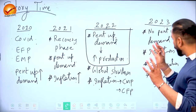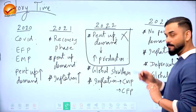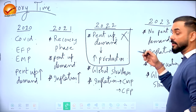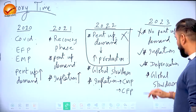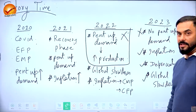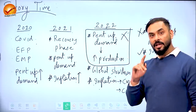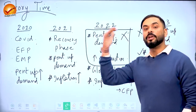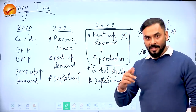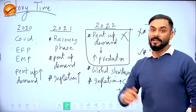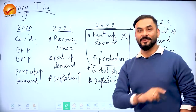For 2023, pent-up demand is now gone — whatever suppressed demand existed has mostly been fulfilled. Inflation is still present, depreciation continues, and global slowdown persists. Most conditions are not favorable, meaning growth cannot reach full potential given these factors. However, if these problems are corrected, growth can reach higher levels. This is the overall story in which we study the first chapter.